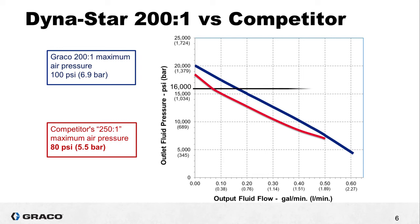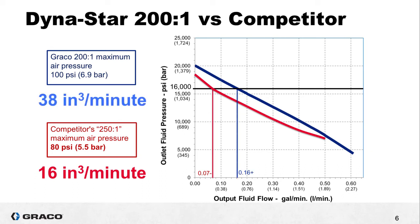At 16,000 psi outlet pressure the competitors pump will deliver half a stroke and then stop but even before it stops the flow rate would be just shy of 0.07 GPM which is roughly 16 cubic inches per minute. Now recall from a minute ago that the Dynastar 200 to 1 delivers 38 cubic inches per minute at 16,000 psi outlet pressure and maximum inlet pressure. That's more than twice the flow at 16,000 psi.